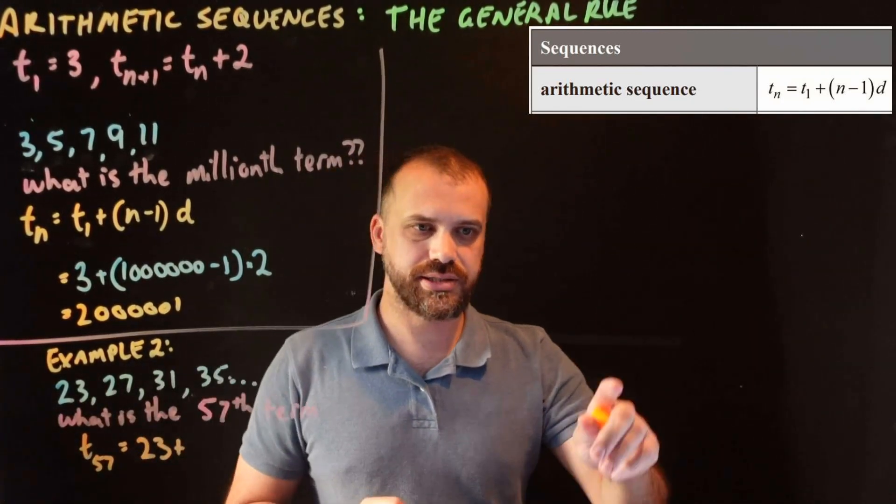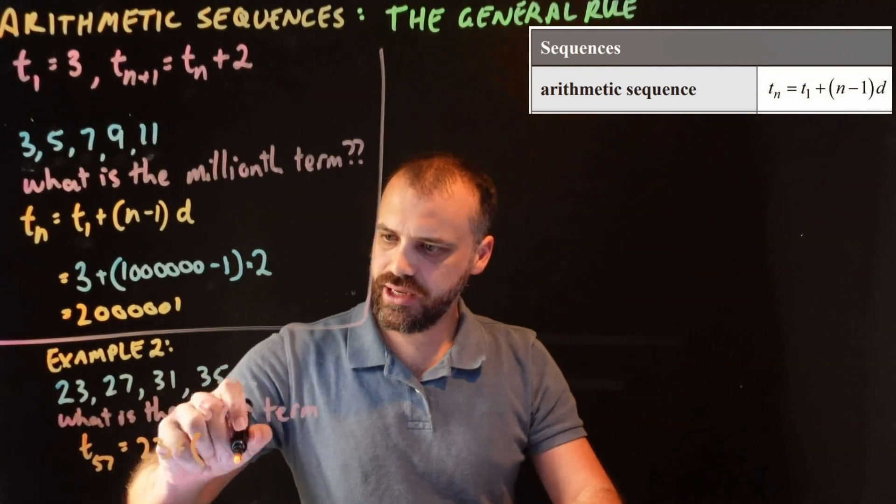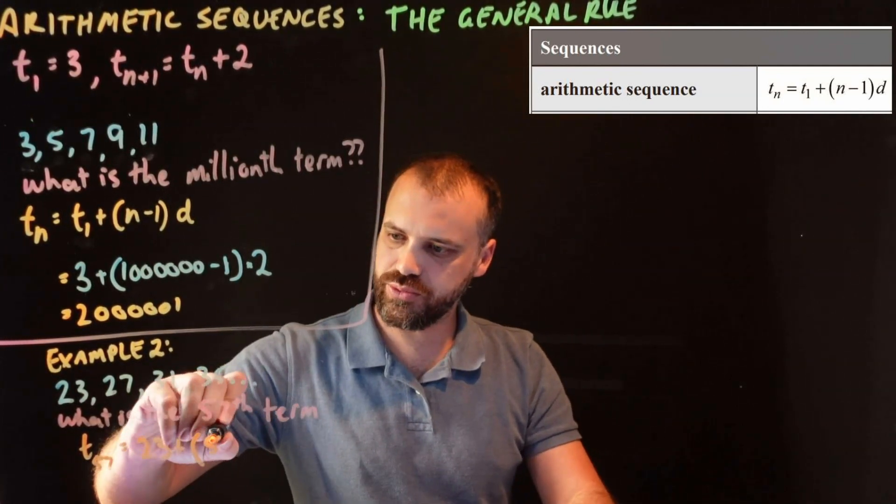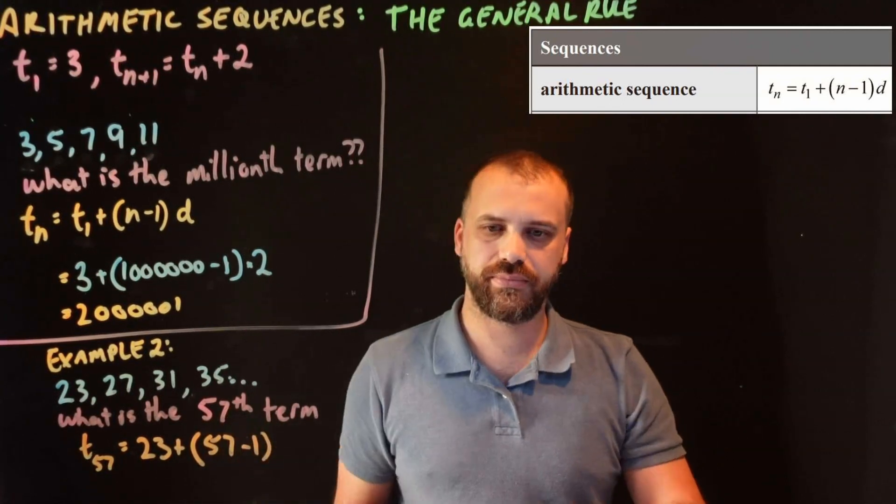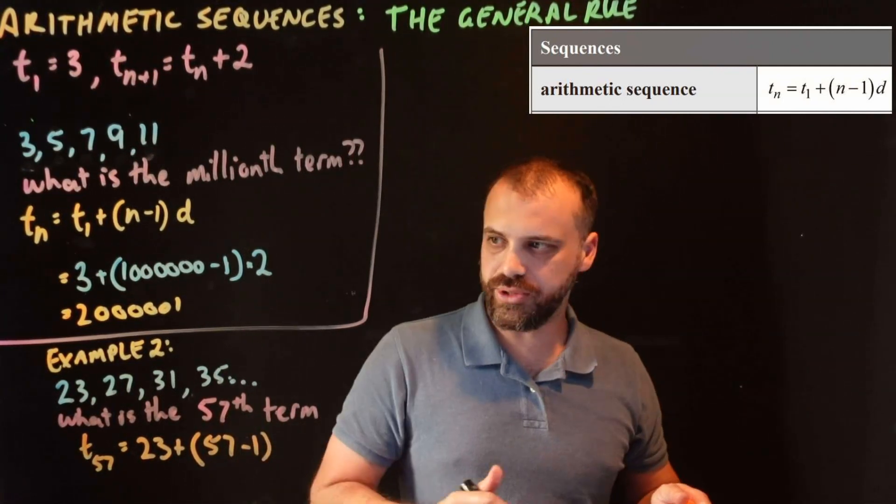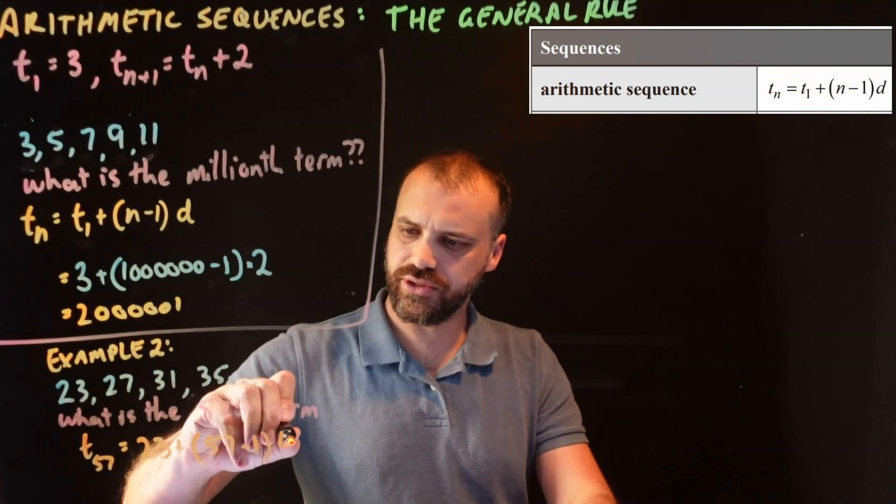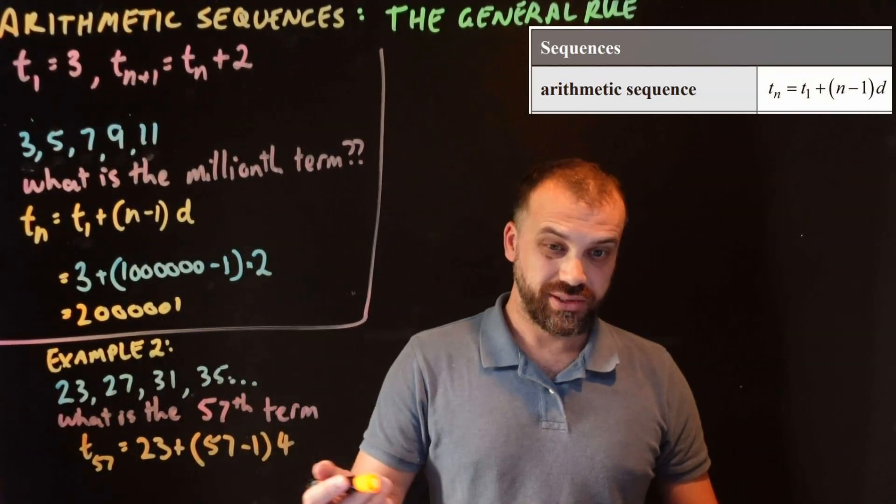23 plus n. What's my n? My 57th term is what I want to do. 57 minus 1. Don't forget that minus 1, times the common difference, common difference of 4.